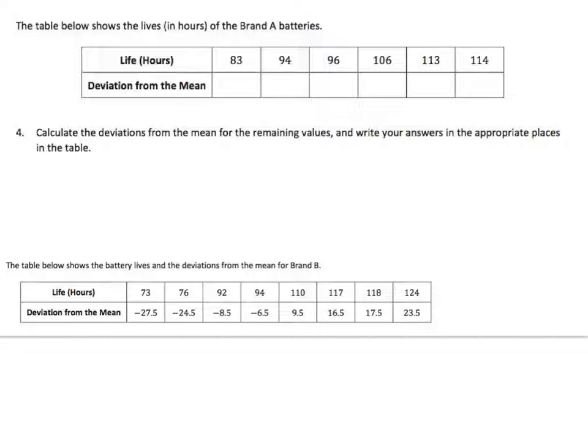The table below shows the lives in hours of the brand A batteries. Number four says calculate the deviations from the mean for the remaining values and write your answers in the appropriate places in the table. So, now we're doing deviations from mean. So, we already calculated the mean of battery A. Do you guys remember what it was? 110? I need to go back and look. 101. The mean for battery A was 101.